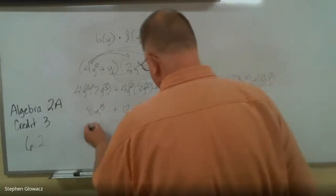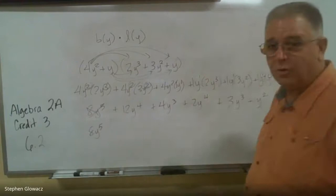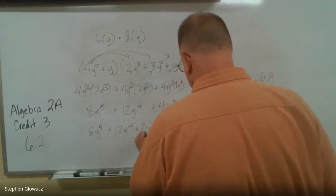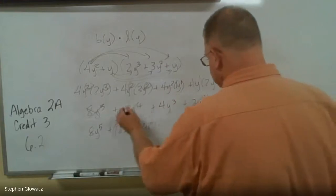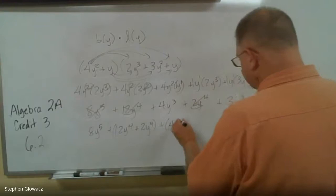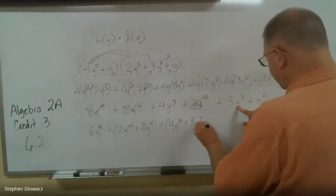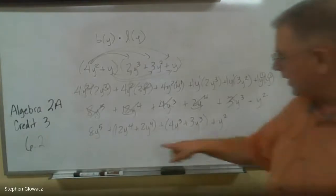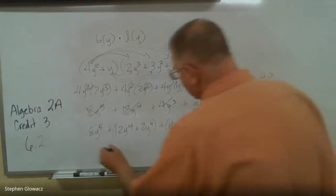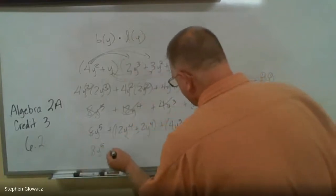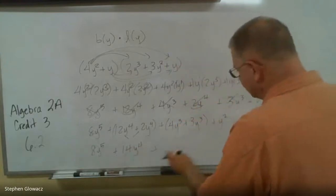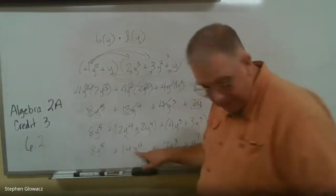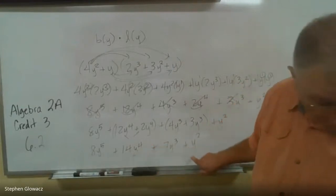Now combining like terms. The only y⁵ term is 8y⁵, so bring that down. For y⁴: 12 plus 2 is 14y⁴. For y³: 4 plus 3 is 7y³. And the only y² term is y², so bring that down. Final answer: 8y⁵ + 14y⁴ + 7y³ + y².